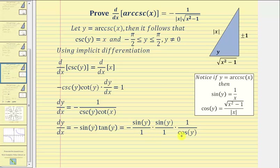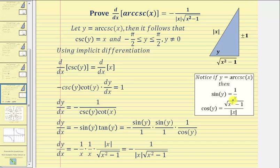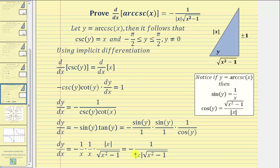Now we perform a substitution for sine y and cosine y. We know sine y equals one over x, so we have negative one over x times one over x times one over cosine y. The reciprocal of cosine y is the absolute value of x over the square root of x squared minus one. This simplifies — noting that x times x is always positive and the absolute value of x is positive — so the remaining factor of x in the denominator must be the absolute value of x. Therefore, dy/dx equals negative one divided by the absolute value of x times the square root of x squared minus one.